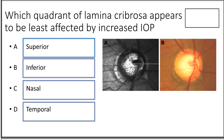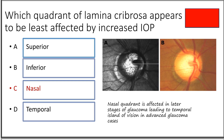Ninth question: which quadrant of the lamina cribrosa appears least affected by increased IOP — superior, inferior, nasal, or temporal? The answer is nasal. When glaucomatous damage starts, it begins with the superior and inferior neuroretinal rim, then progresses to the temporal side. The nasal quadrant is usually preserved until late stages, which is why patients present with loss of temporal field of vision.